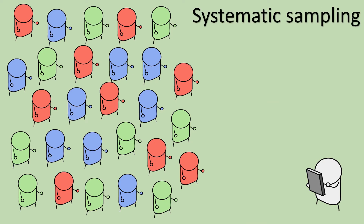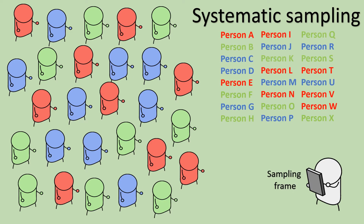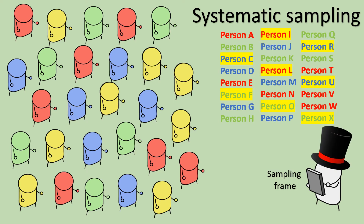The next sampling technique is systematic sampling, sometimes called systematic random sampling. This involves the researcher taking the sampling frame and working their way down the list, selecting every second, third, or fourth person. It has an element of random selection in the sense that the sample is determined by the formula of selecting every nth person on the list.